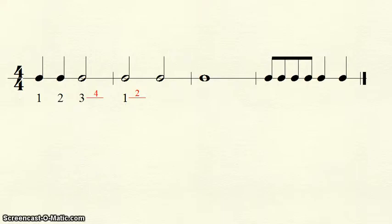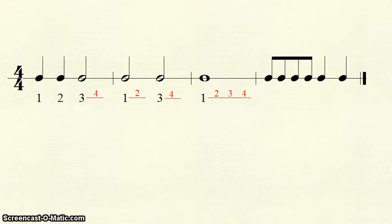We are done with the first measure. The next measure begins with a half note, so we write one and a line and put two on that line. Another half note is next, so we write three and a line, putting four on the line. The third measure is entirely a whole note, so we put one and a line with two, three, and four on the line.